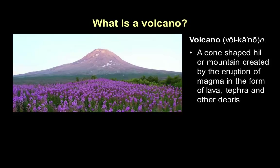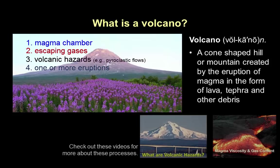Let's start with a definition. A volcano is a cone-shaped hill or mountain created by the eruption of magma in the form of lava, tephra, and other debris. The presence of a volcano is indicative of an underlying magma source in the crust or mantle, escaping gases that help drive the eruption, a range of potential volcanic hazards, and one or more eruptions needed to build the cone.